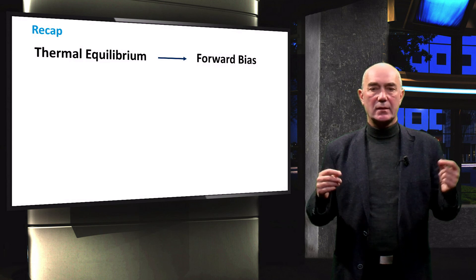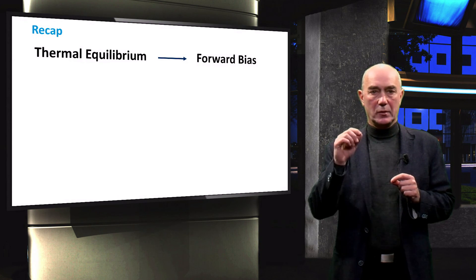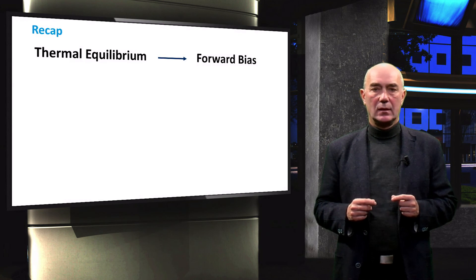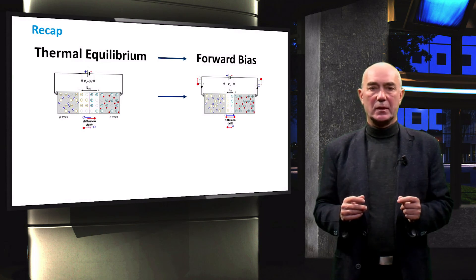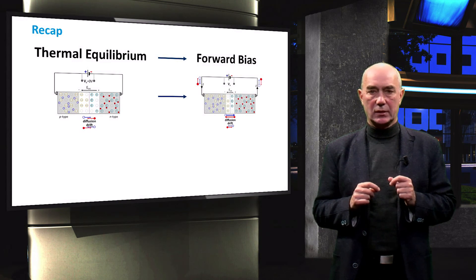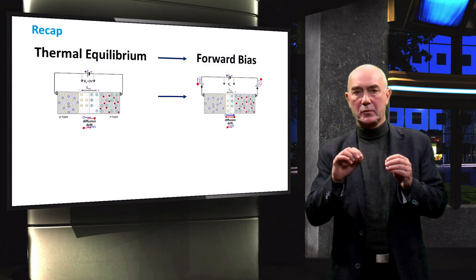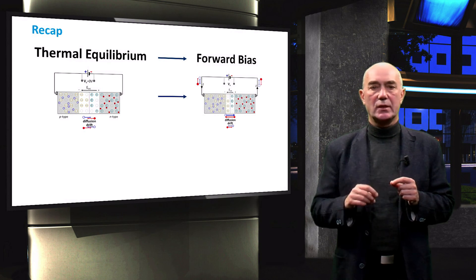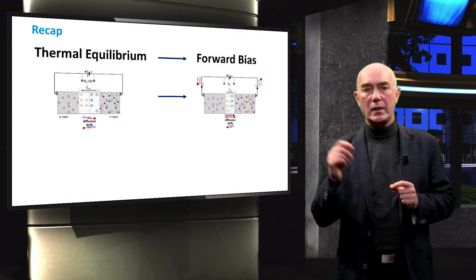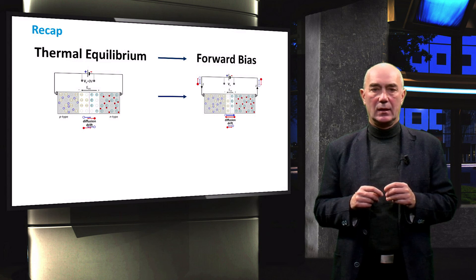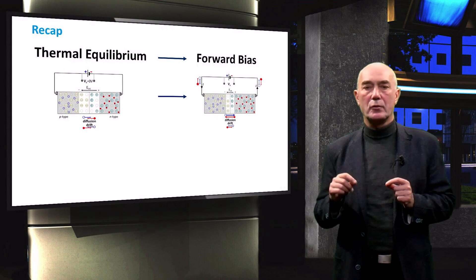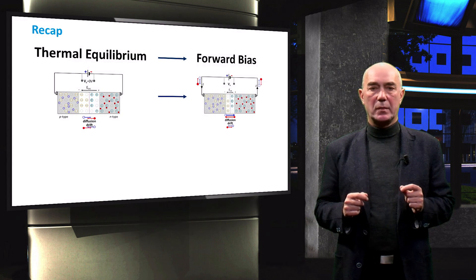Let's recap what we discussed in this video. Our goal was to understand what happens to a PN junction when we move from thermal equilibrium to a forward bias. We saw that as we apply a forward bias, the depletion region starts to decrease, which leads to a smaller internal electric field in the depletion region. A net current will flow through the PN junction diode as a result of recombination current caused by the recombination of an increased number of minority carriers with the majority carriers in the quasi-neutral regions. The increased concentration of minority carriers is a consequence of the diffusion current through the depletion region that is no longer compensated by the drift current.